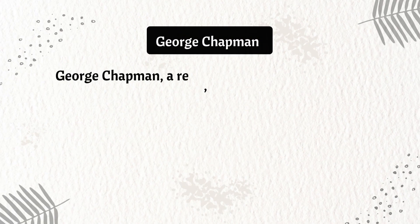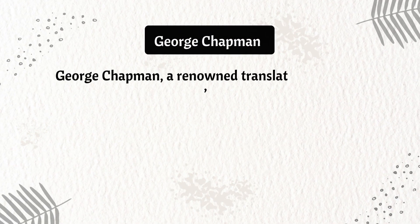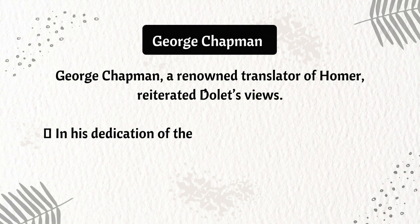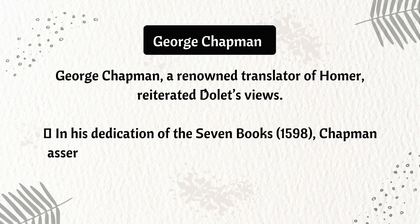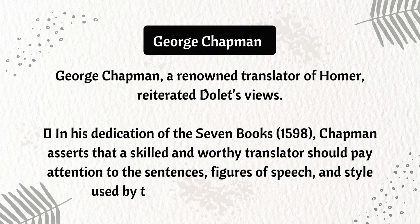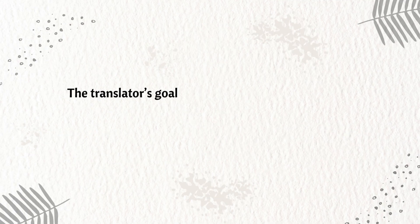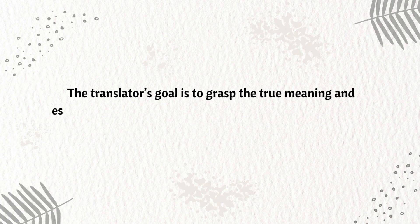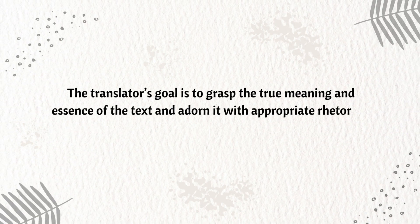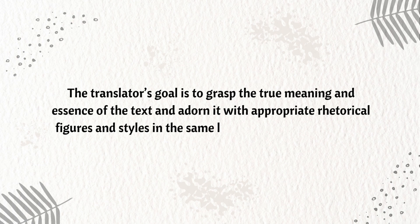George Chapman, a renowned translator of Homer, reiterated Dolet's views. In his Dedication of the Seven Books (1598), Chapman asserts that a skilled and worthy translator should pay attention to the sentences, figures of speech, and style used by the author in the original work. The translator's goal is to grasp the true meaning and essence of the text and adorn it with appropriate rhetorical figures and styles in the same language as the translation.